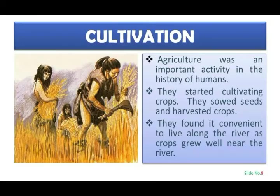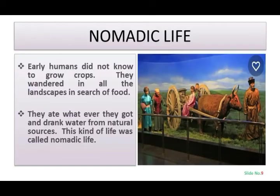Agriculture was an important activity in the history of humans. They started cultivating crops — they sowed seeds and harvested crops. They found it convenient to live along rivers as crops grew well near the river.